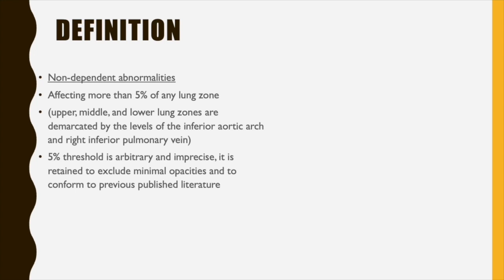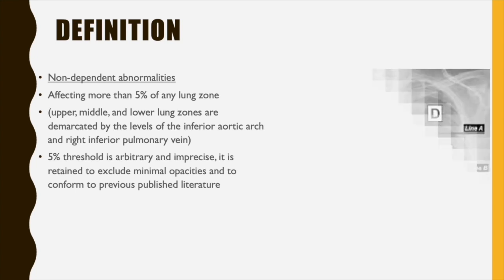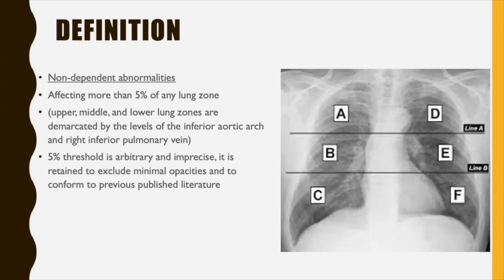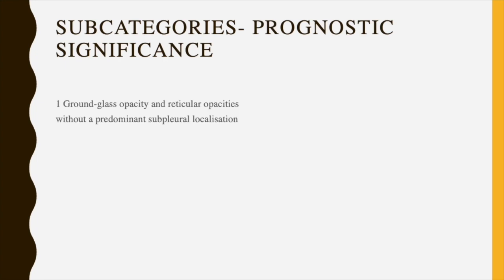By definition, radiologists define ILAs as non-dependent abnormalities which involve more than 5% of any lung zone. This 5% is an arbitrary value based on observations in previously published retrospective literature. Whether it is in the upper, middle, or lower zone of the lung, if 5% or more of the involved area has those changes, it will be termed ILA.